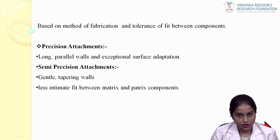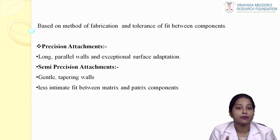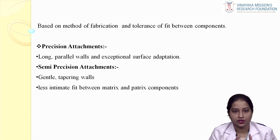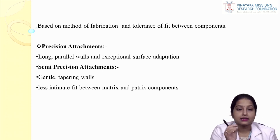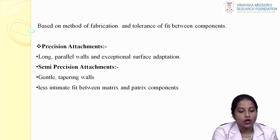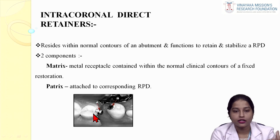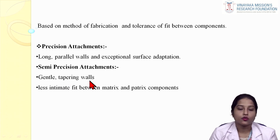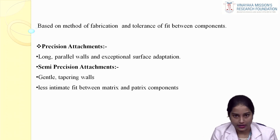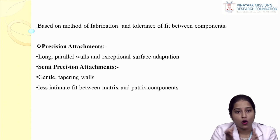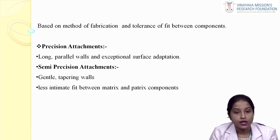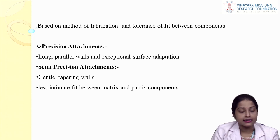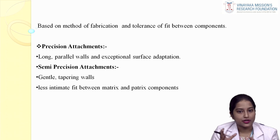Based on the method of fabrication, these attachments can be either a precision attachment or a semi-precision attachment. In precision attachment, the patrix component has long parallel walls, creating intimate contact between the matrix and patrix, so all forces are transferred to the tooth. In semi-precision attachment, the patrix has gentle tapering walls, creating a leeway or gap between matrix and patrix, allowing movement of the prosthesis and dissipation of forces so not all forces are transferred completely to the tooth.